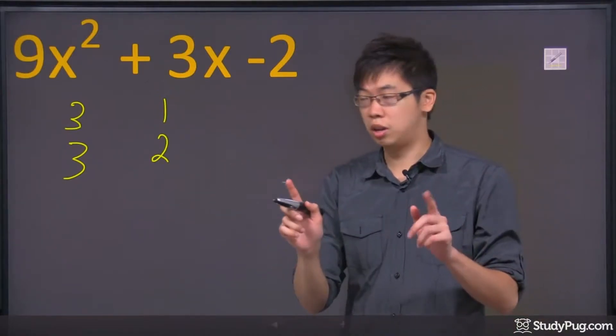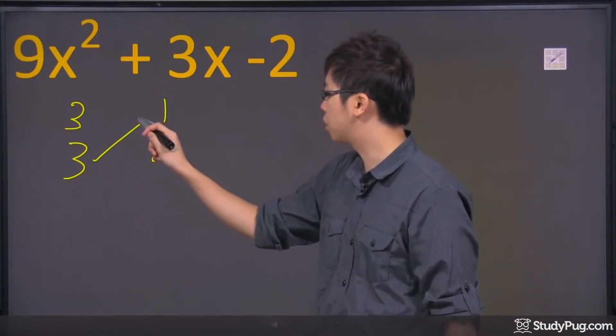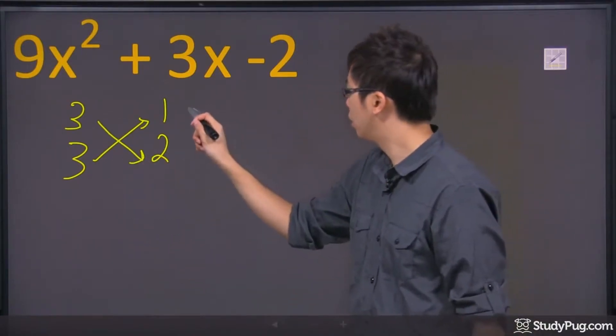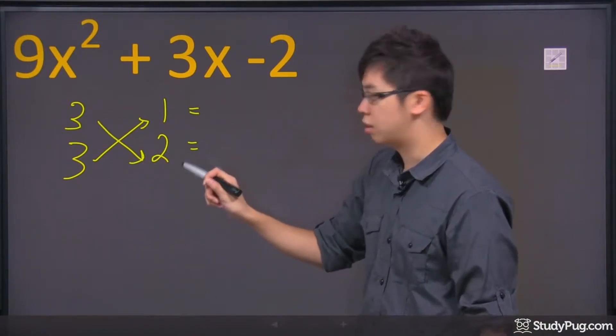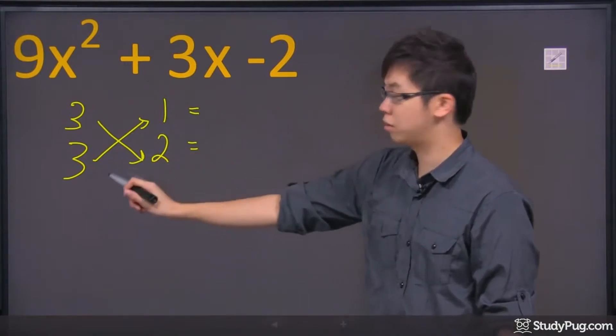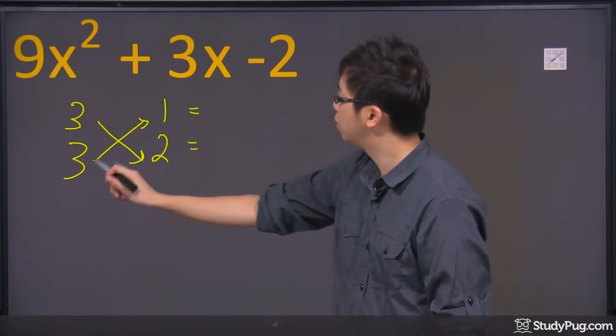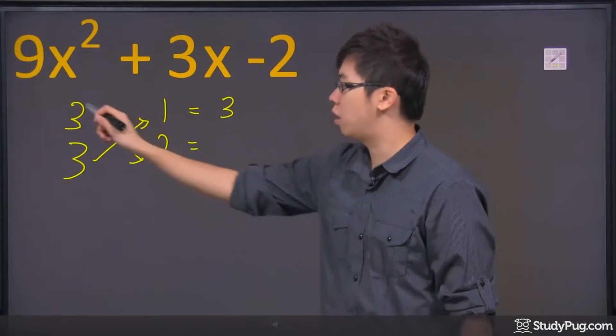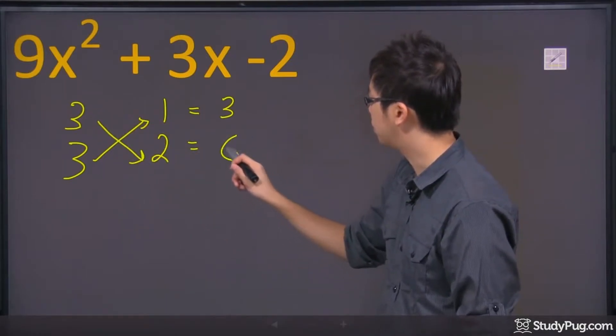Now, the trick is you have to do something that's called cross multiplying. Now, why are we doing this? You will see. 3 times 1, we're cross-multiplying here. 3 times 1 is a 3 and 3 times 2 is a 6.